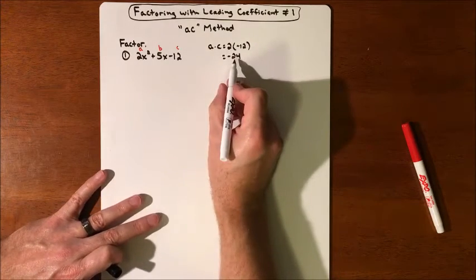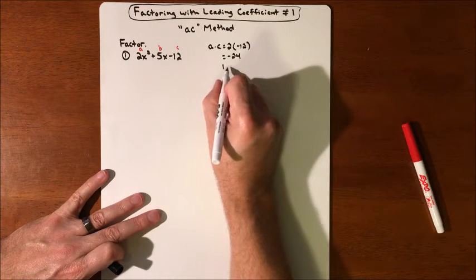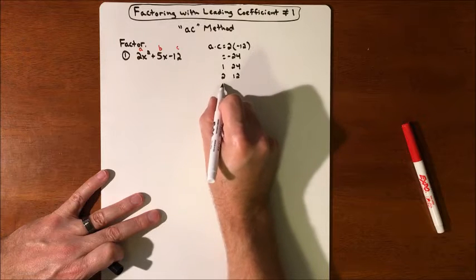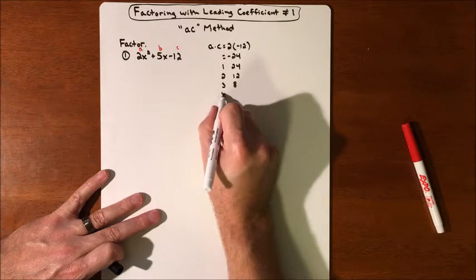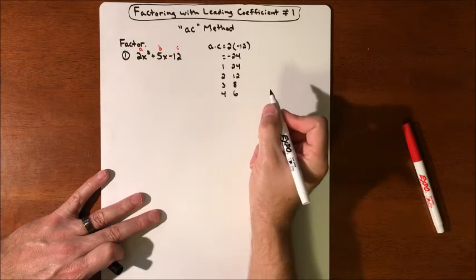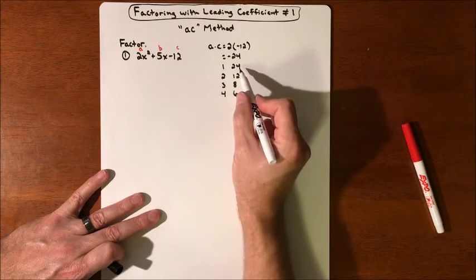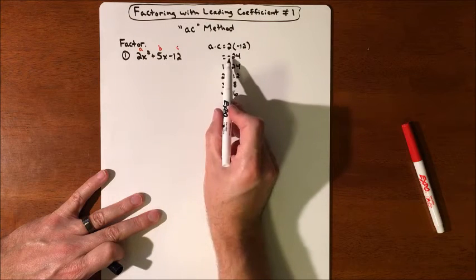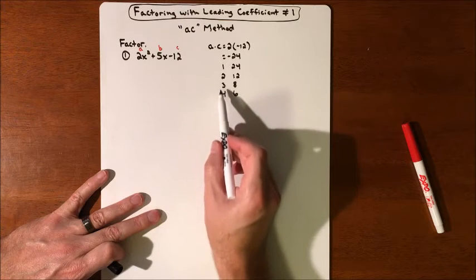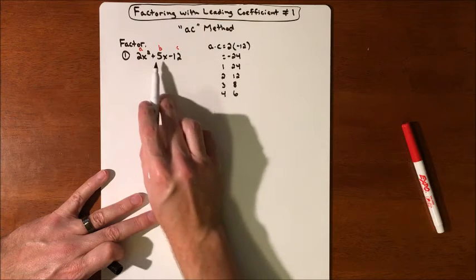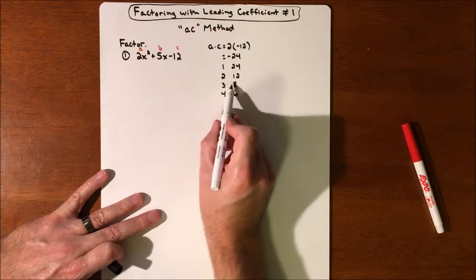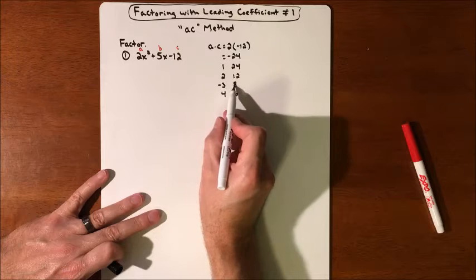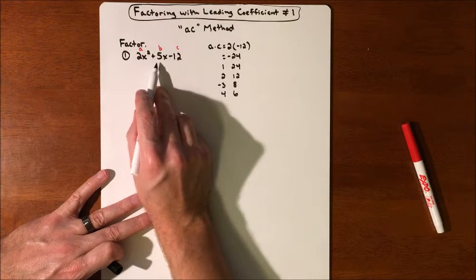So what we need is numbers that multiply to negative 24. Our factor pairs are 1 and 24, 2 and 12, 3 and 8, and 4 and 6. Not only do they need to multiply to negative 24, but we're also looking for values that add up to 5. Since the product is negative, one number must be positive and one negative. The pair 3 and 8 differ by exactly 5, so we make the 3 negative — positive 8 and negative 3 give us positive 5.